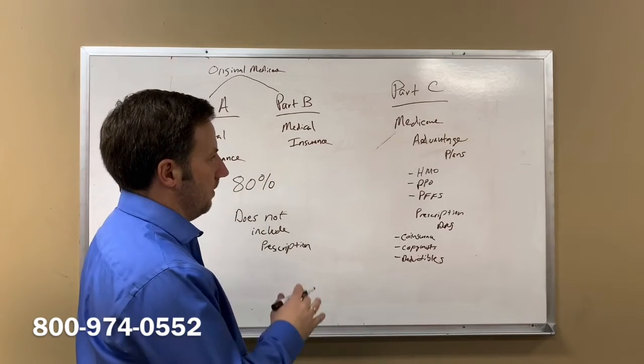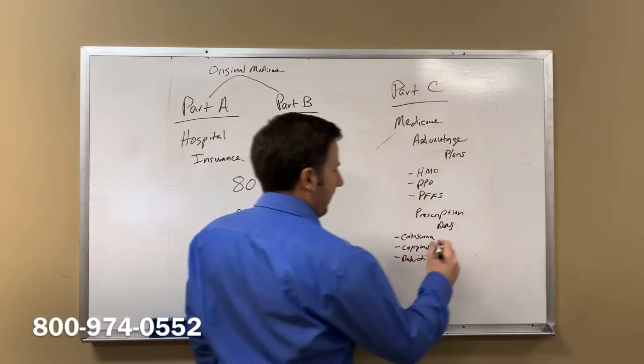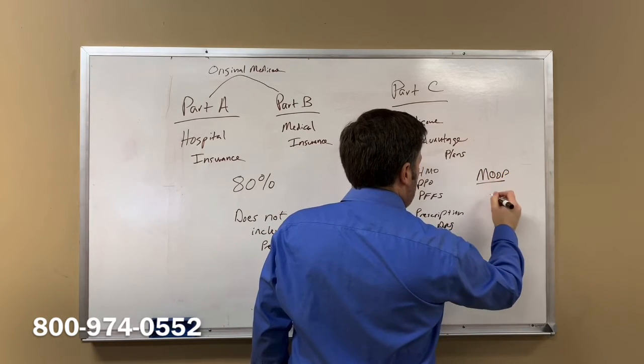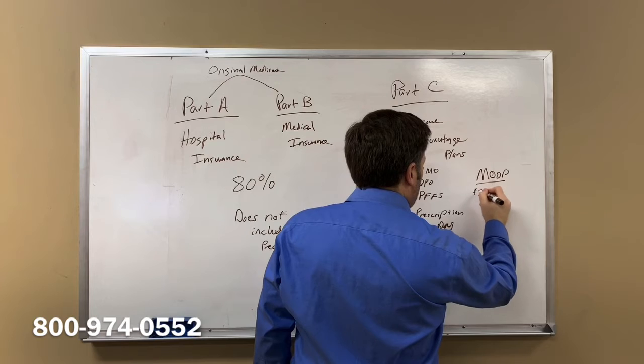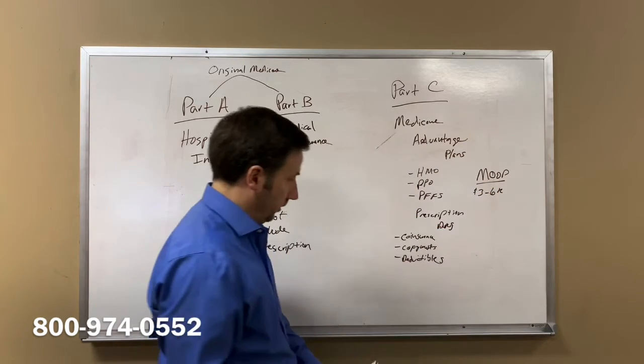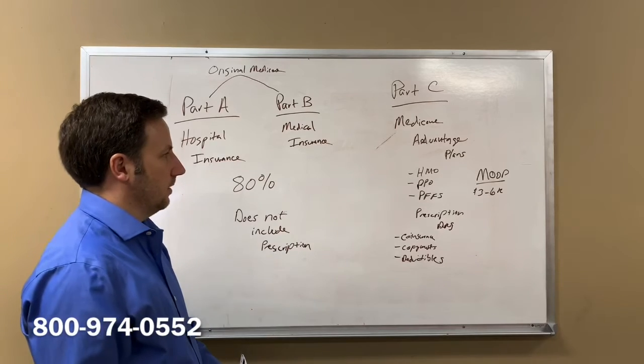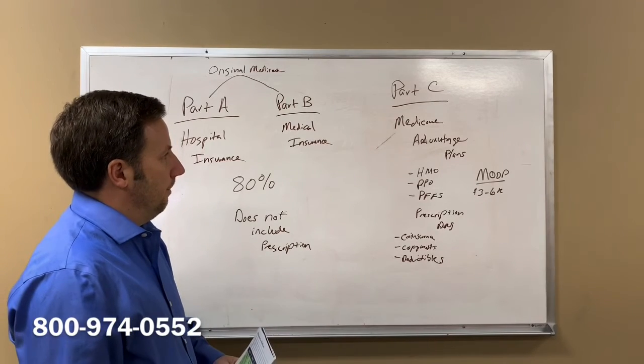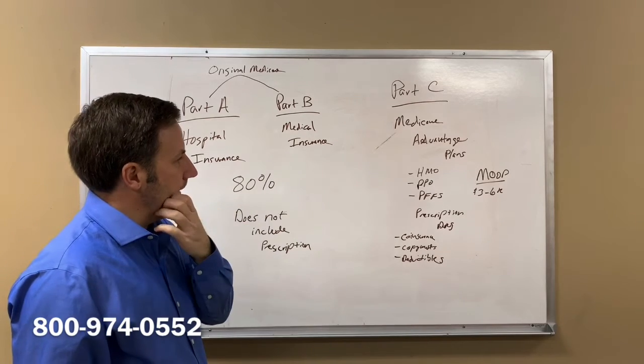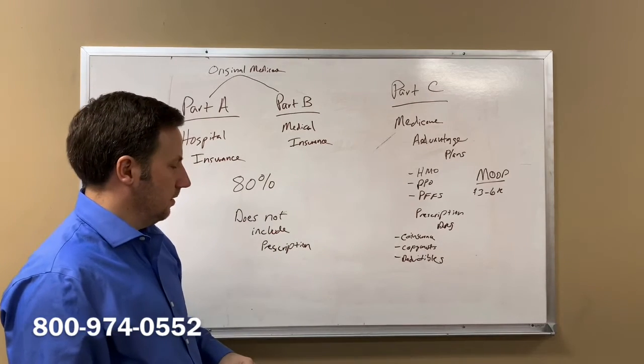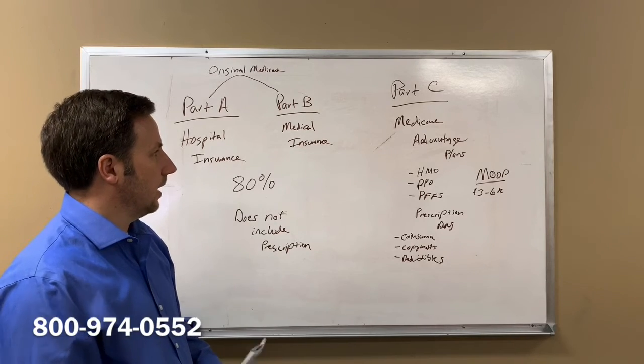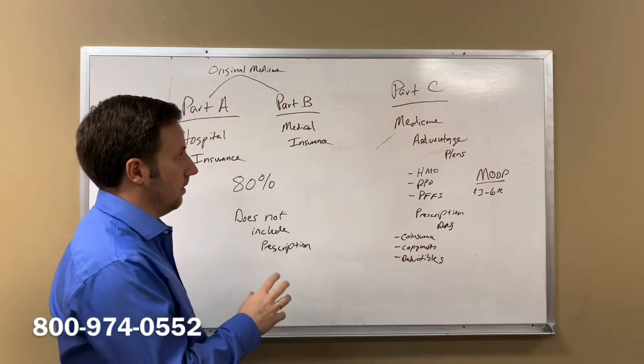Each Medicare Advantage plan has a maximum out-of-pocket or MOOP for the year that you would spend. And typically, they're about $3,000 to $6,000 of potential maximum out-of-pocket expenses. Medicare Part C, Medicare Advantage plans, are one option that are available to you to receive your Medicare benefits. You don't have to do Medicare Part C.